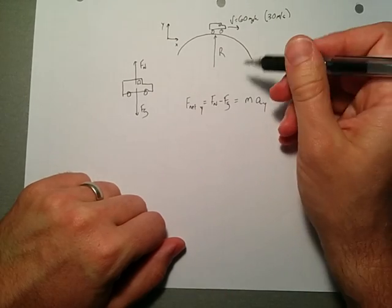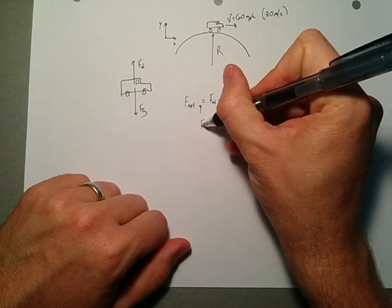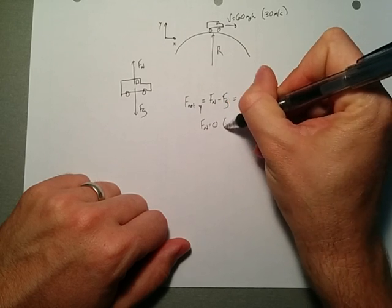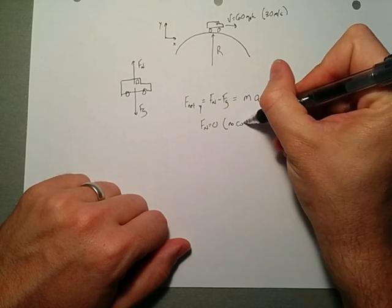Of course, we're asking for that exact moment. And so, what we're interested in is when Fn is equal to zero. So, no contact with the road.